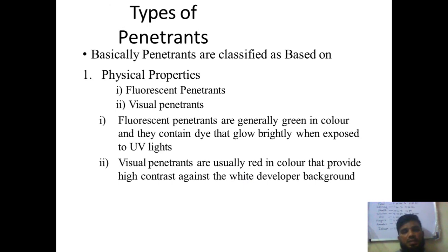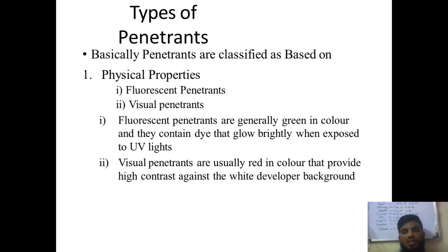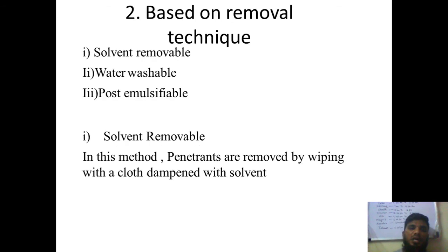Penetrants are classified based on physical properties. First are fluorescent penetrants and visual penetrants. Fluorescent penetrants are absorbed when UV light is passed through the surface. Visual penetrants can be observed with the naked eye due to their high-contrast colors — red or yellow are high-contrast colors easily seen from a longer distance. Colors like green are not good projectors and cannot be easily seen with the naked eye, so UV lights are used to visualize them.